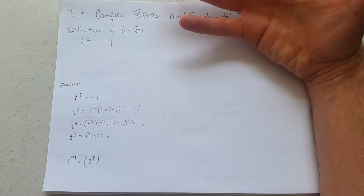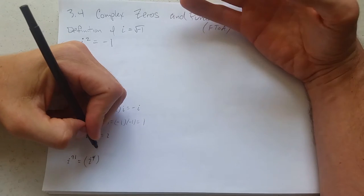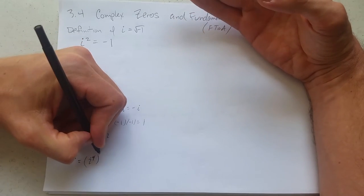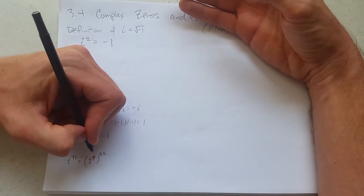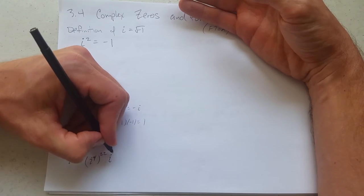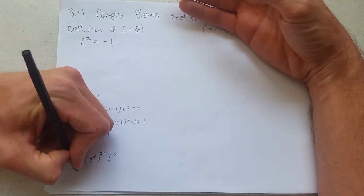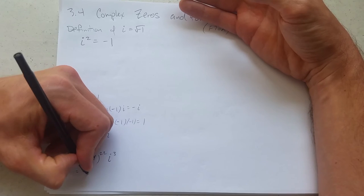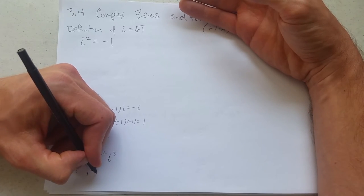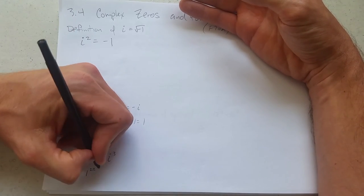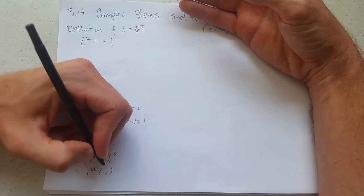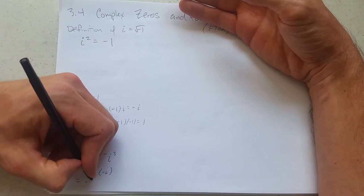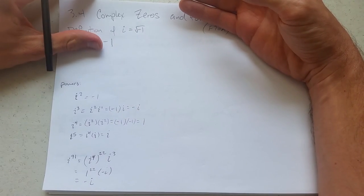So I can get 88, which would be 22. And then there will be 3 left over. So i to the fourth, this is 1 to the 22nd power times i cubed, which we said was negative i. So this is just 1, and this will just all come out to be negative i.